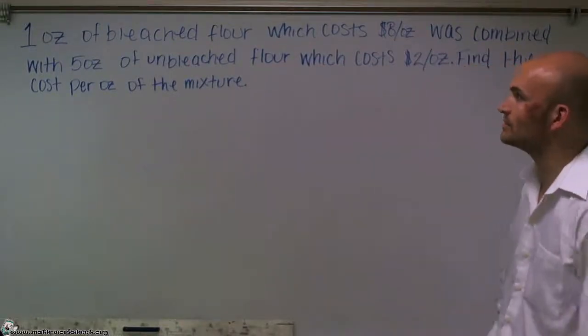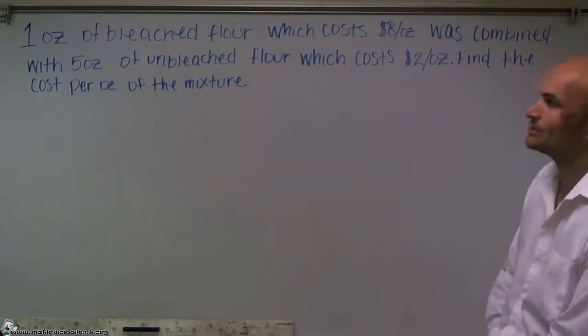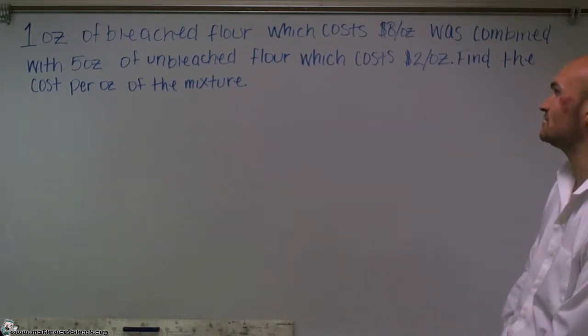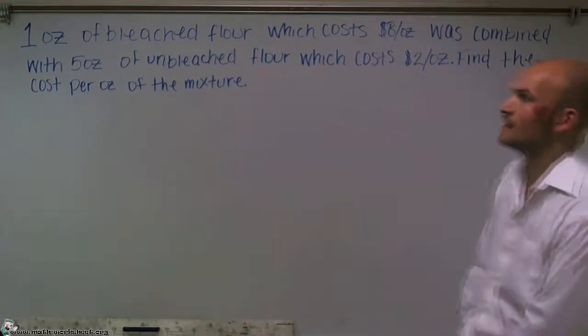It says one ounce of bleached flour, which costs $8 per ounce, was combined with five ounces of unbleached flour, which costs $2 per ounce. Find the cost per ounce of the mixture.